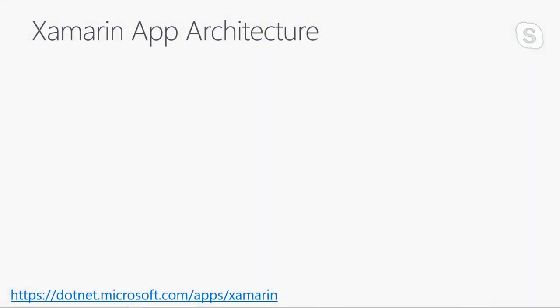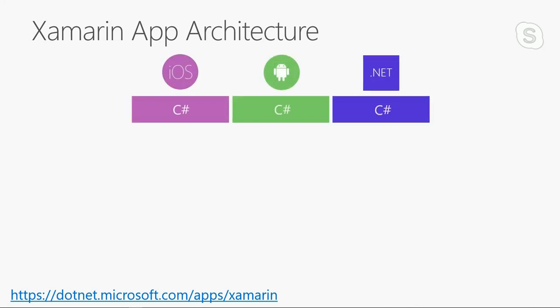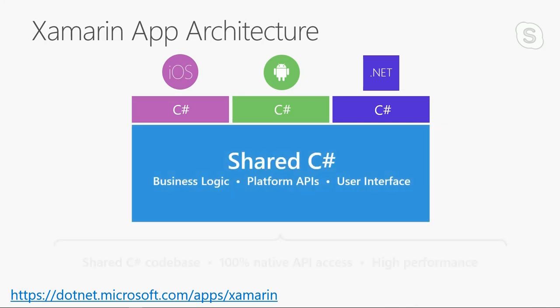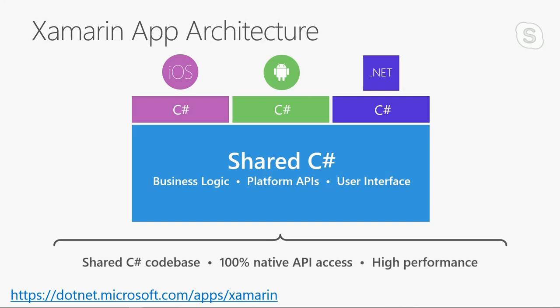If you aren't familiar with Xamarin, Xamarin's app architecture is quite unique compared to some other approaches. You have three different UI layers or framework layers with regards to iOS using C-Sharp, Android using C-Sharp, and the .NET framework using C-Sharp. This all encompasses into a shared C-Sharp layer, which you can include all of your business logic, all of your platform APIs, and even your whole user interface such as using Xamarin.Forms or other MVVM frameworks.